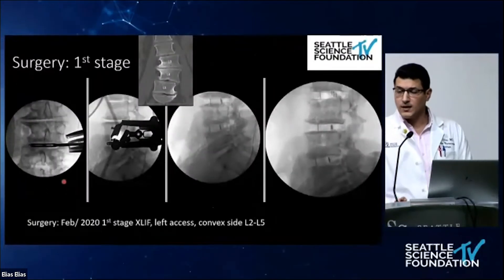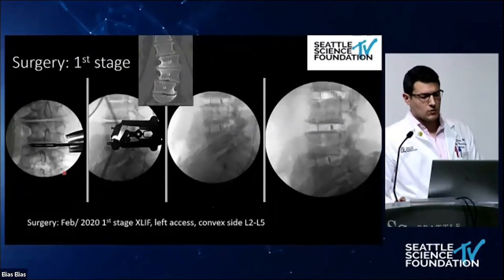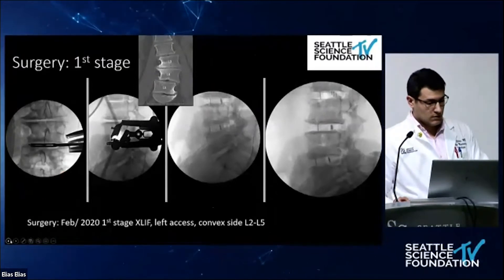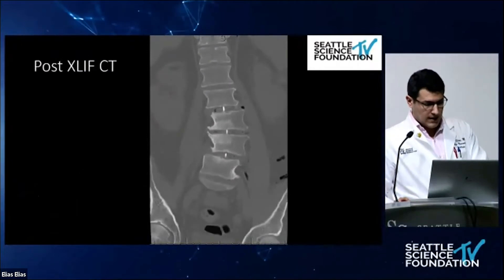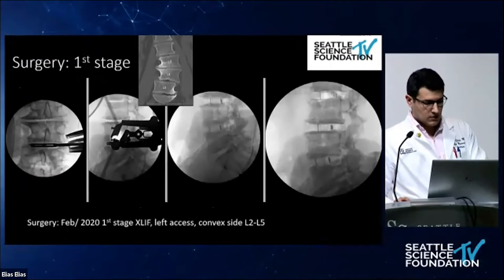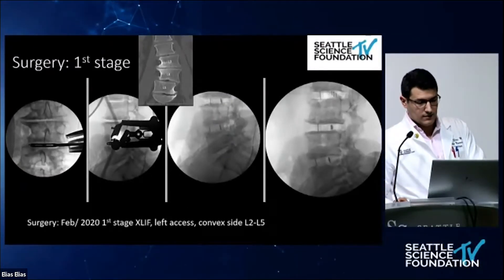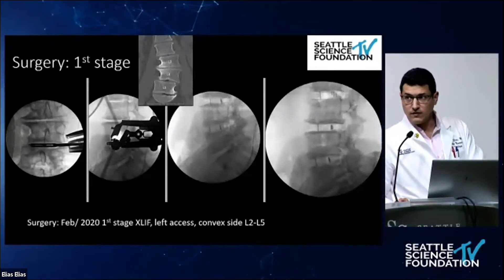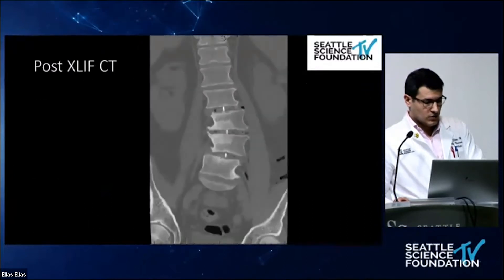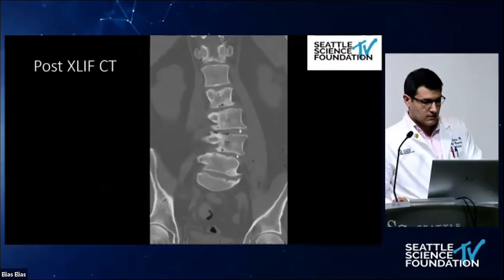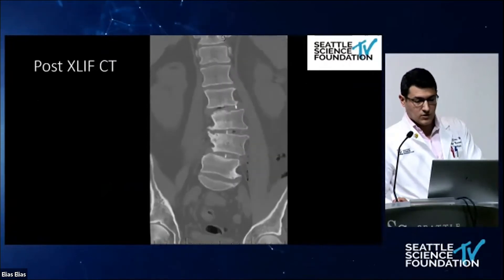We elected to take this patient to surgery for a two-stage procedure. The first stage was XLIF, which would be followed by a posterior approach. For the XLIF, we went from the left side — the convex side — and did L2 to L5 cage insertions. Those are the XLIF cages shown on the right side of the screen. This is the post-op CT scan showing the XLIF cage insertions after the first stage.